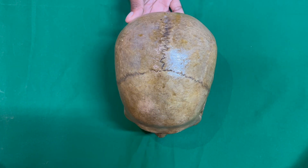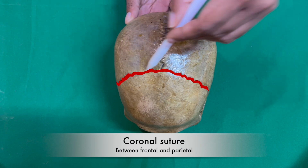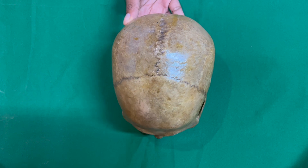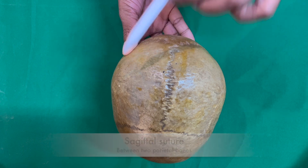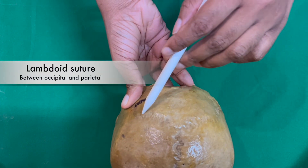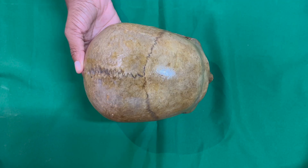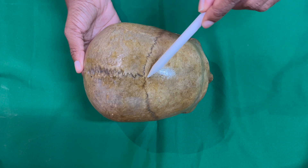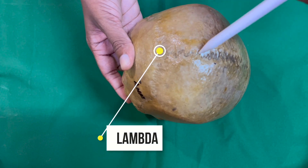Now let's identify the joints or the sutures that separate the above bones. The coronal suture is placed between the frontal and the two parietal bones. The sagittal suture is placed in the median plane between the two parietal bones. The lambdoid suture lies posteriorly between the occipital and the two parietal bones. The bregma is the meeting point between the coronal and sagittal sutures. The lambda is the meeting point between the sagittal and the lambdoid sutures.